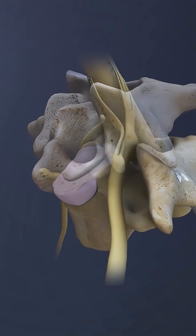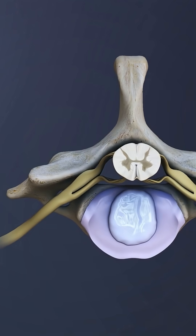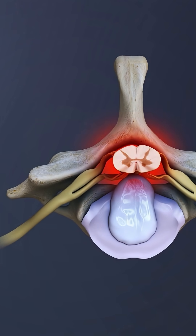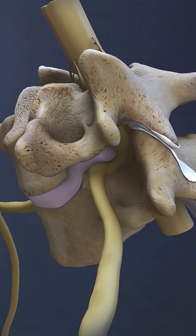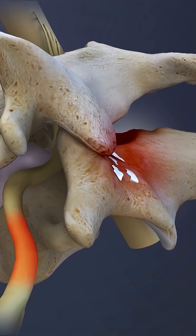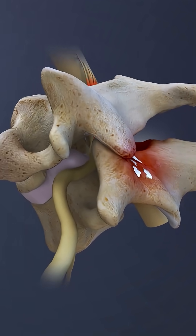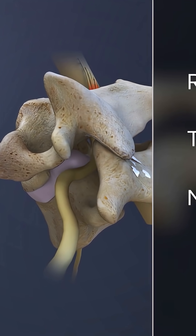If the spinal cord is compressed at the C7 spinal level, it may cause pain and neurological deficits in the arms, legs, or anywhere below the level of compression. Spinal conditions, including disc herniation or facet joint osteoarthritis, may irritate the C7 nerve and cause radicular pain, tingling, and numbness, and weakness along the path of the nerve.